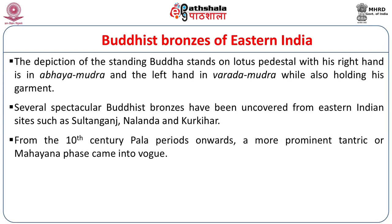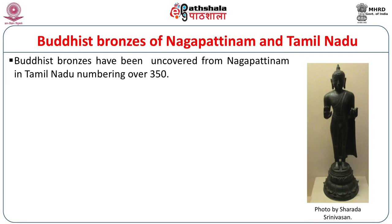From about the 10th century Pala period, a more prominent Tantric or Mahayana phase also came into vogue with depictions of numerous Bodhisattvas such as Avalokiteshvara, Maitreya, and Manjushri. Tamil Nadu also had a very rich tradition of Buddhist bronzes, and the inscriptions of various Chola rulers mentioned endowments to the Vihara at Nagapatinam, said to have been patronized by the Srivijayan king of Southeast Asia. In fact, Nagapatinam is the single largest findspot of bronzes in India, with as many as 350 bronzes uncovered in hoards from Nagapatinam.